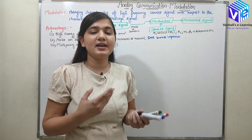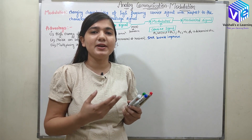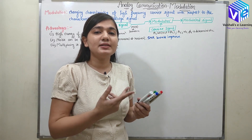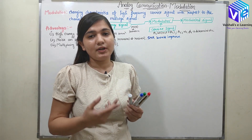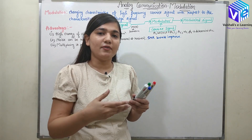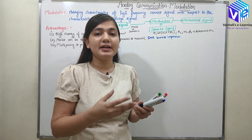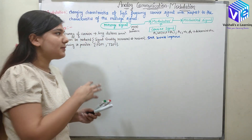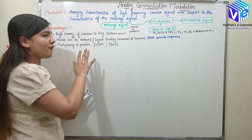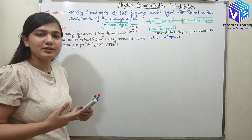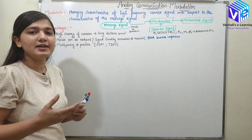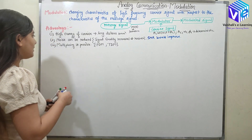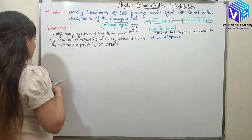If two of your friends are talking simultaneously, you won't understand which one is saying what, or the voices would get mixed when they reach you. But multiplexing avoids this possibility and signals can be transmitted simultaneously.